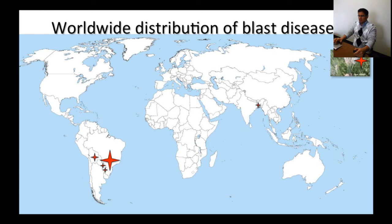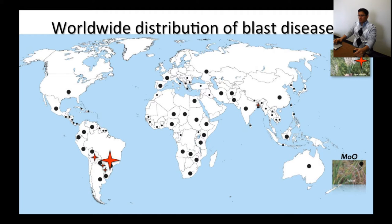Let's talk about the worldwide distribution of blast diseases. Wheat blast was reported for the first time in Brazil in 1985. Soon after, it was reported in nearby countries — Bolivia in 1997, then Paraguay, and also in the northeast part of Argentina. In 2016, it was reported for the first time outside of the Americas, in Bangladesh, where it has been causing major losses.